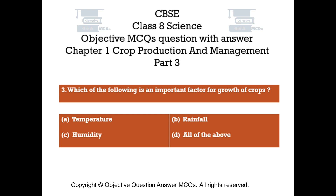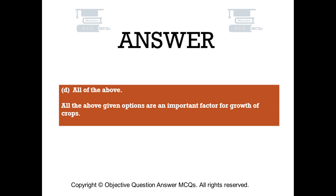Question number 3. Which of the following is an important factor for growth of crops? Option A: Temperature. Option B: Rainfall. Option C: Humidity. Option D: All of the above. The right answer is option D — All of the above. All of the given options are important factors for growth of crops.